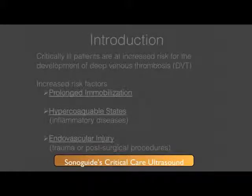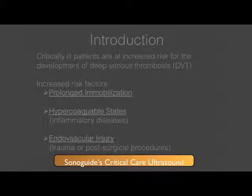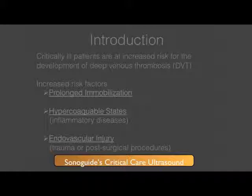Critically ill patients are at particular risk for the development of DVTs. Some of Virchow's triad that put them at increased risk include prolonged immobilization, hypercoagulable states due to inflammatory diseases, and endovascular injury from trauma, post-surgical procedures, or the general nature of their critical illness.